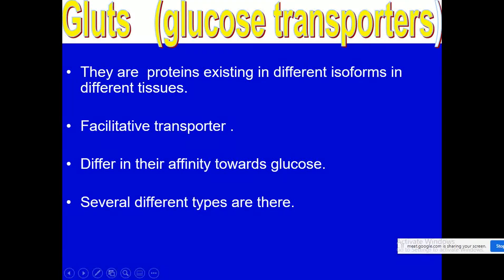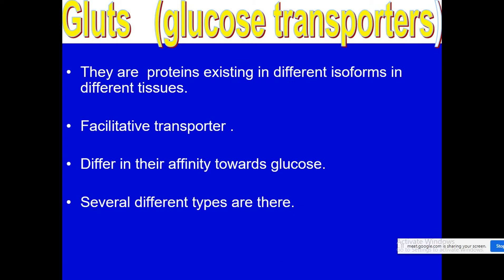Glucose is absorbed by a facilitative transportation mechanism, so it cannot be absorbed by simple diffusion in huge concentration. It requires some specialized proteins called glucose transporter proteins. Several types of glucose transporter proteins exist, and they are present as different isoforms in different tissues. They perform the same function but have some differences — that's why they are called isoforms. They all help in the transportation of glucose into the cells.